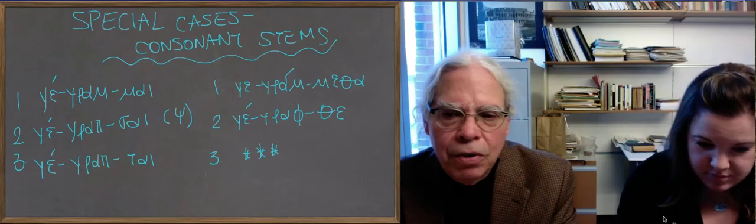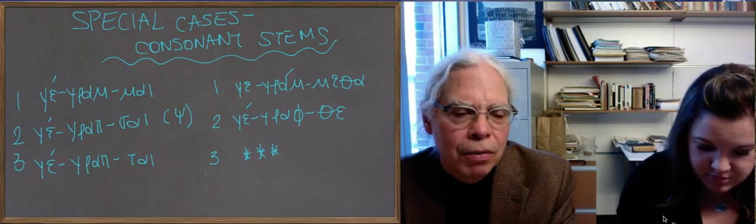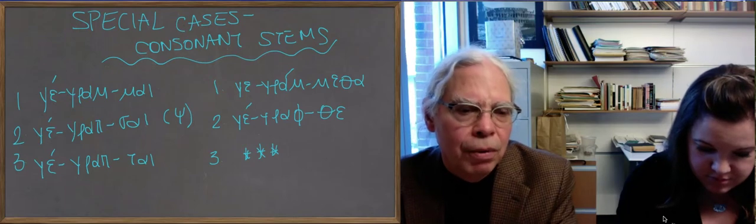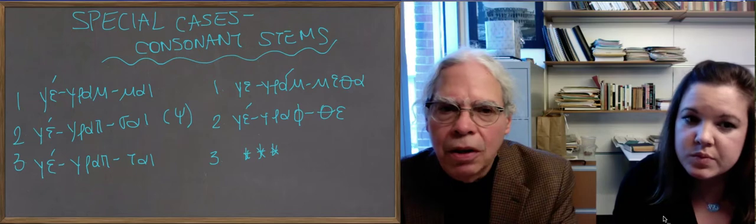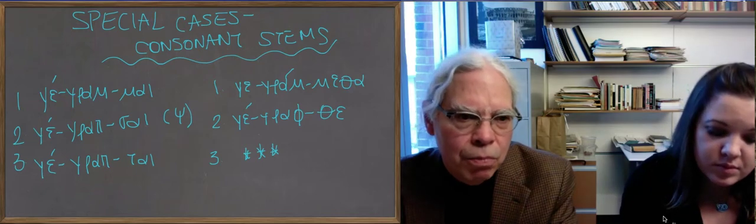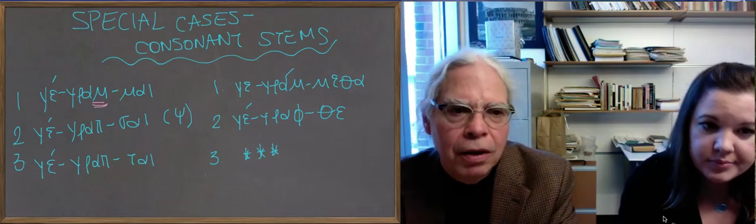What happens then is because there is no thematic vowel, look at what happens with grafo. You get ge, what was originally ge, graf my, the phi at the end of the stem of grafo becomes a mu because of the my.